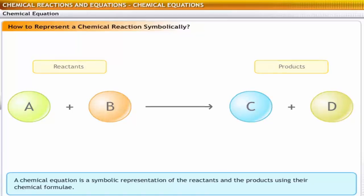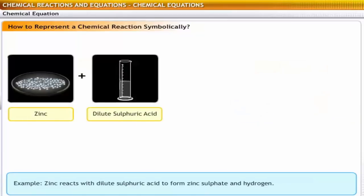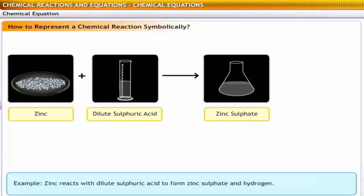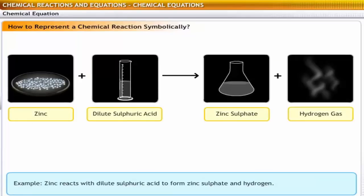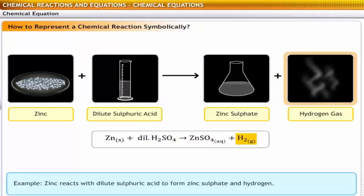For example, zinc reacts with dilute sulfuric acid to form zinc sulfate and hydrogen gas. This is represented in the form of an equation as shown here. Solid zinc reacts with dilute sulfuric acid to form an aqueous solution of zinc sulfate and hydrogen gas.